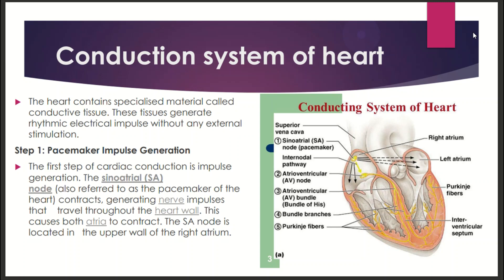The conduction system of the heart uses specialized tissue called conductive tissue, which generates rhythmic electrical impulses. Electrical impulse generation involves four steps. Step one: pacemaker impulse generation — the sino-atrial node generates the nerve impulse, which travels through the heart wall causing the atrium to contract. The sino-atrial node is the pacemaker of the heart, located in the right atrium.